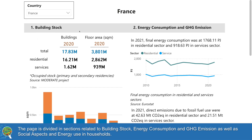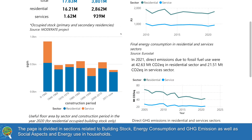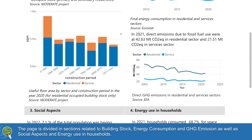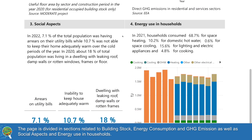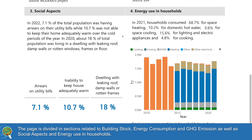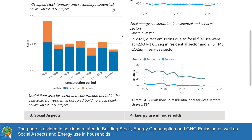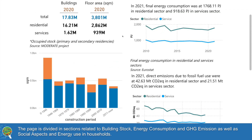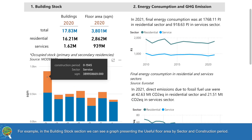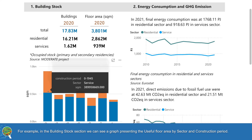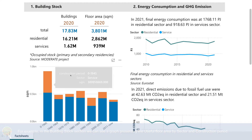The page is divided into sections related to building stock, energy consumption and GHG emissions, as well as social aspects and energy use in households. For example, in the Building Stock section we can see a graph presenting the useful floor area by sector and construction period.